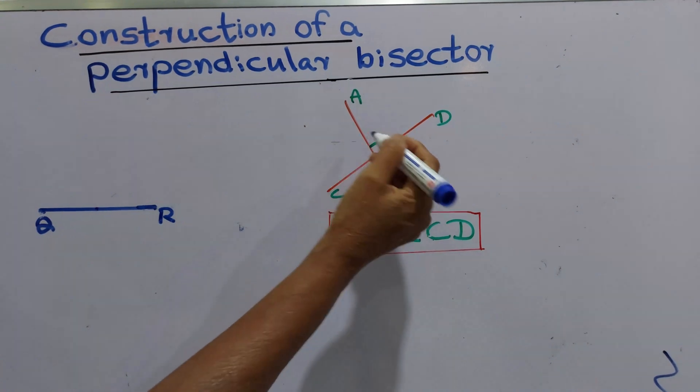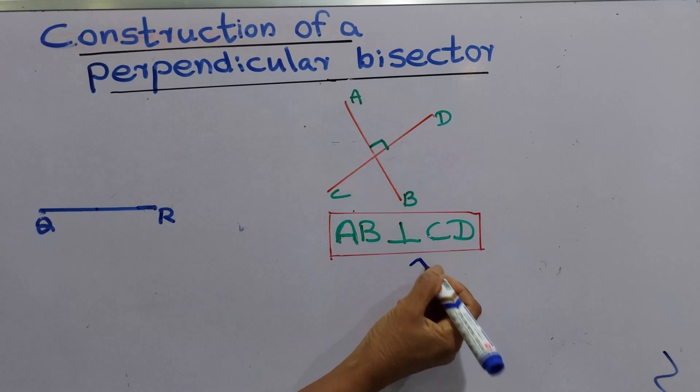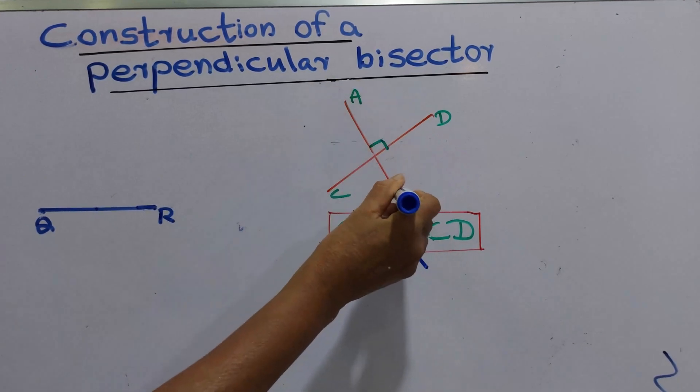This is a right angle. We show this with a symbol. We show a right angle like this. Here are points A, B, C, D.